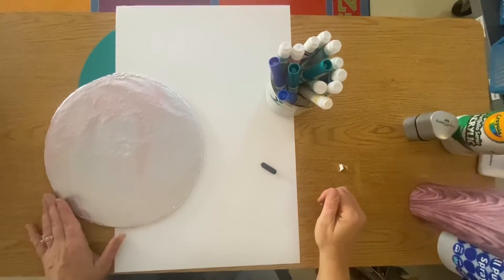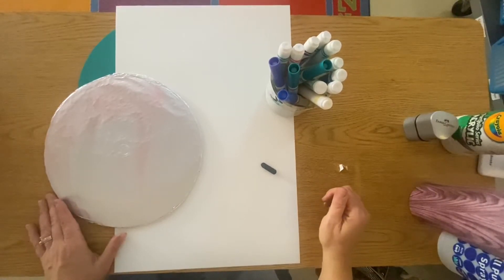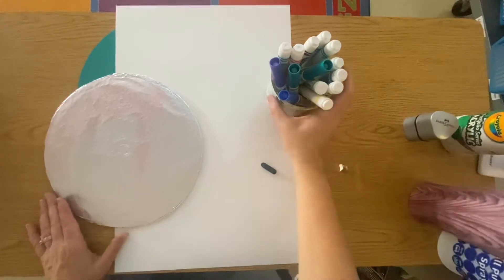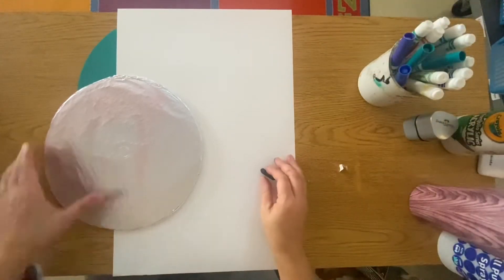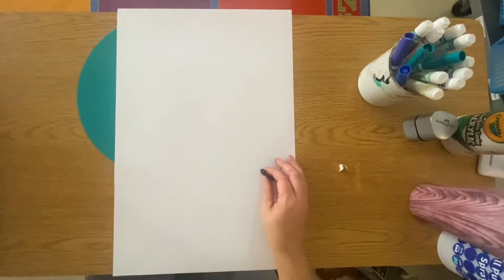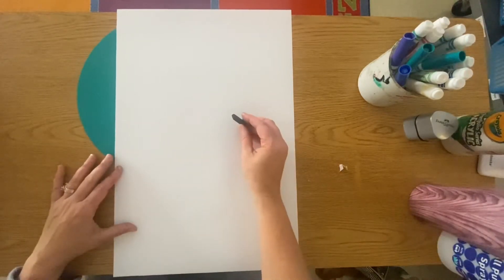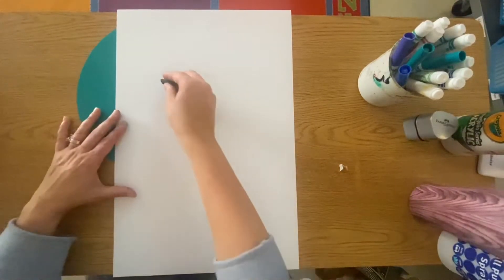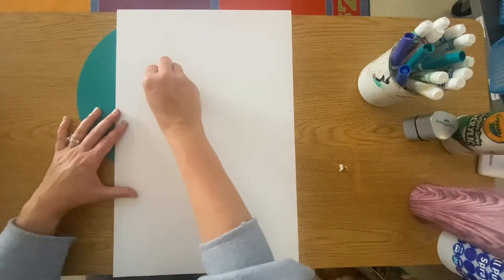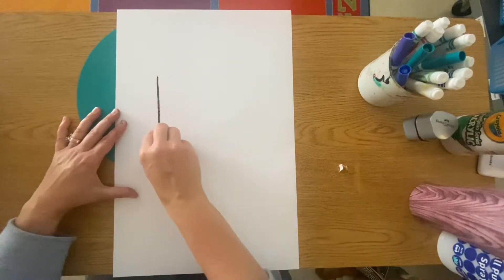To start this project you'll need your large piece of white paper and a black oil pastel to start. Then for the second part you'll need your printing plate and markers. To begin, we will start with drawing a large rectangle.